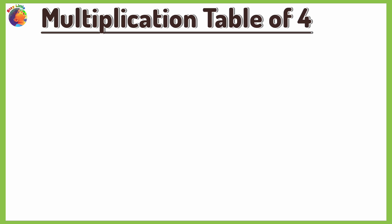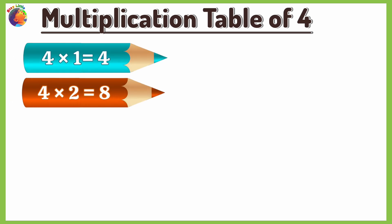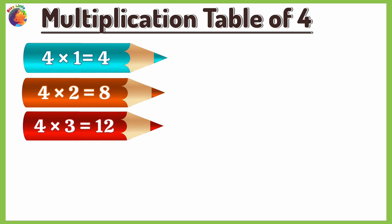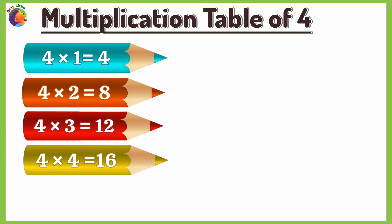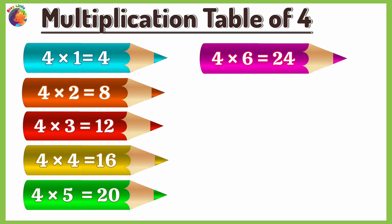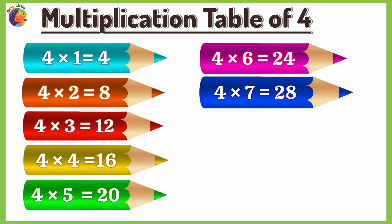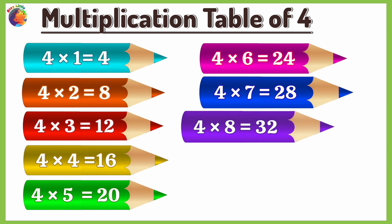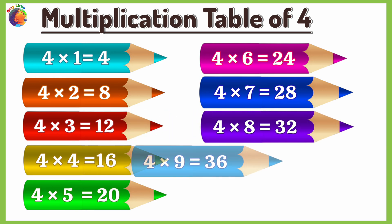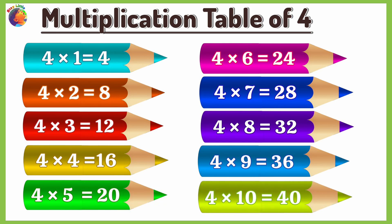Multiplication Table of 4. 4 times 1 is 4, 4 times 2 is 8, 4 times 3 is 12, 4 times 4 is 16, 4 times 5 is 20, 4 times 6 is 24, 4 times 7 is 28, 4 times 8 is 32, 4 times 9 is 36, 4 times 10 is 40.